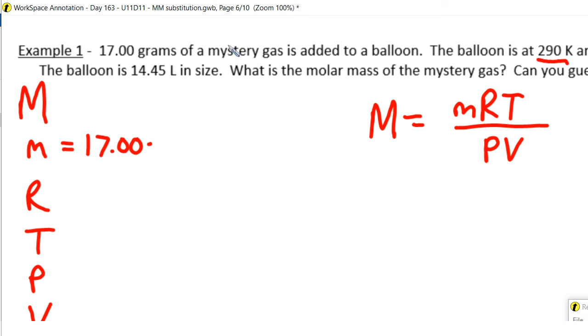Alright, so 17 grams of a mystery gas are added to a balloon. The balloon is at 290 Kelvin, so that's my temperature. Because it's in Kelvin, I keep it as is. I need to have the temperature in Kelvin. If it was in Celsius, I would add 273 to it to make it Kelvin.